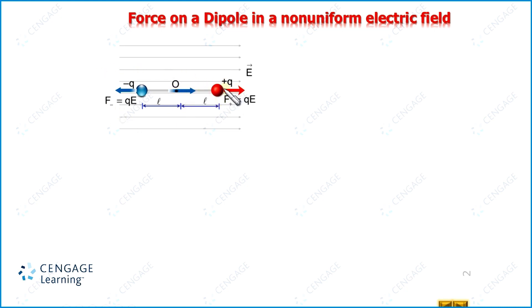That means a translational equilibrium condition. Also, the net torque acting on the dipole in this condition is also 0, meaning rotational equilibrium condition as well.